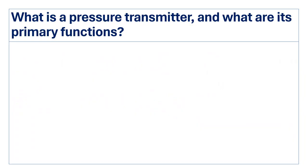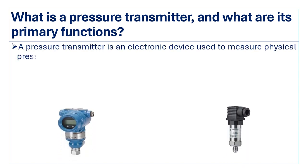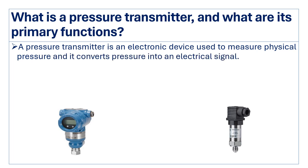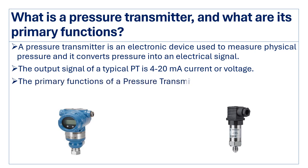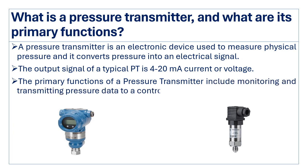What is a pressure transmitter and what are its primary functions? A pressure transmitter is an electronic device used to measure physical pressure and converts it into an electrical signal. The output of a typical pressure transmitter is 4 to 20 mA current or voltage. The primary functions include monitoring and transmitting pressure data to a control system.